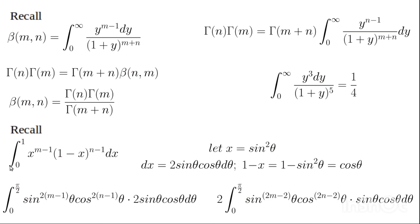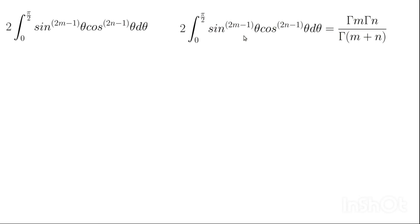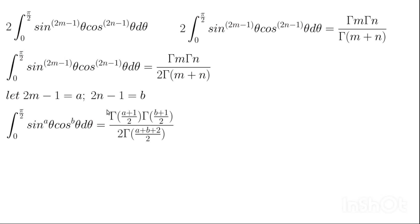Note that the limits change from 0 to 1. When x=0, sinθ=0 so θ=0; when x=1, sin θ=1 so θ = π/2. That gives us the trigonometric form of the beta function integrated from 0 to π/2. If we further substitute 2m-1=a and 2n-1=b, so that m=(1+a)/2 and n=(1+b)/2, then this expression reduces to the integral of sin^a(θ)·cos^b(θ) dθ from 0 to π/2.